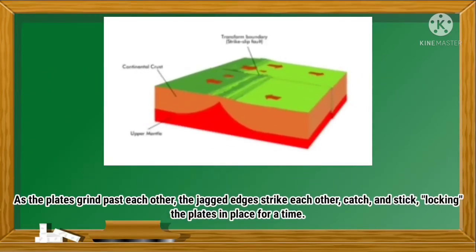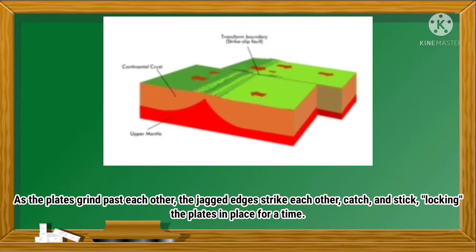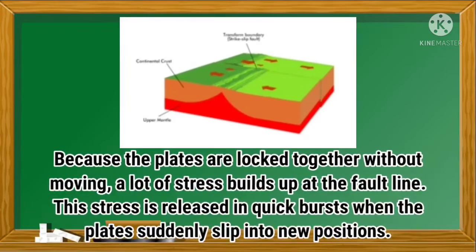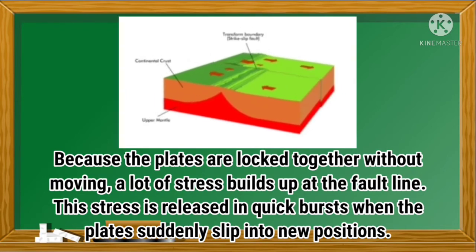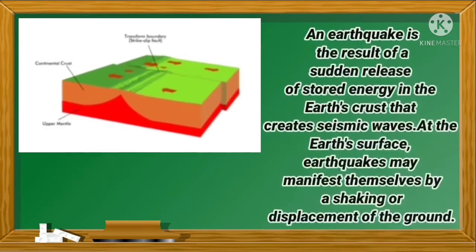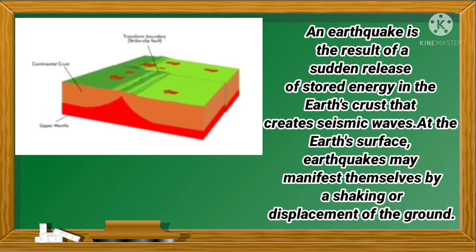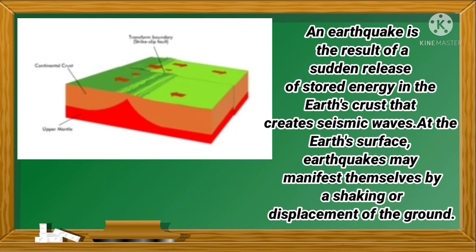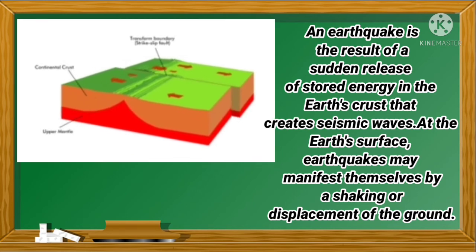Transform boundaries and the resulting faults produce many earthquakes because the edges of tectonic plates are jagged rather than smooth. As the plates grind past each other, the jagged edges strike each other, catch and stick, locking the plates in place for a time. Because the plates are locked together without moving, a lot of stress builds up at the fault line. This stress is released in quick bursts when the plates suddenly slip into new positions. An earthquake is the result of the sudden release of stored energy in the Earth's crust that creates seismic waves. At the Earth's surface, earthquakes may manifest themselves by a shaking or displacement of the ground.